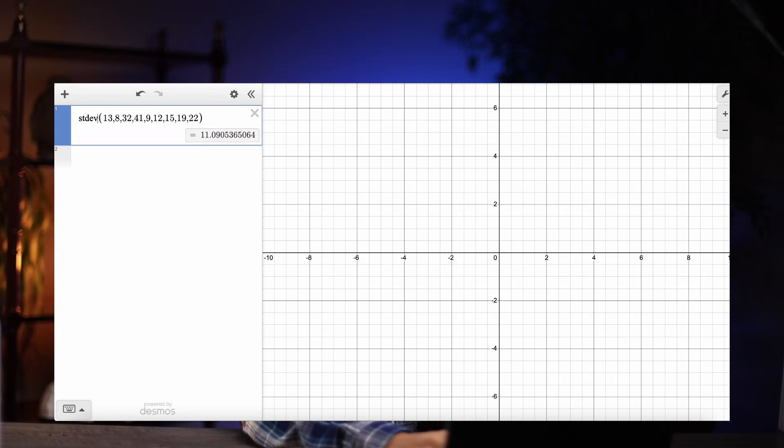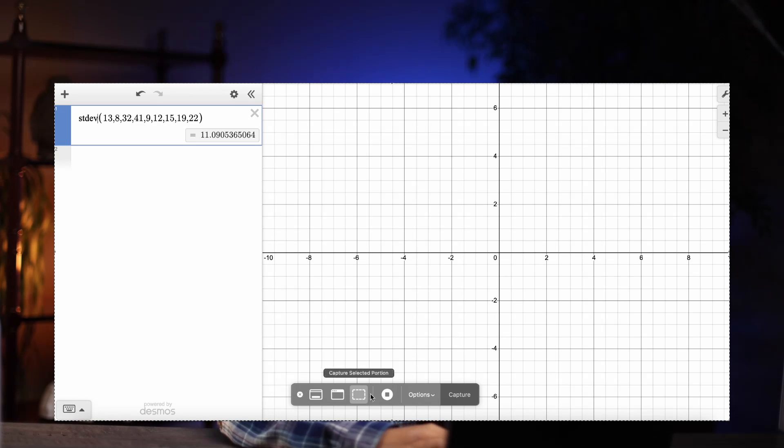Lastly, we can also use Desmos to find the standard deviation of a data set. So all we're going to type in is S-T-D-E-V and then in parentheses, put in the data set. As you can see, it says that the standard deviation is about 11.